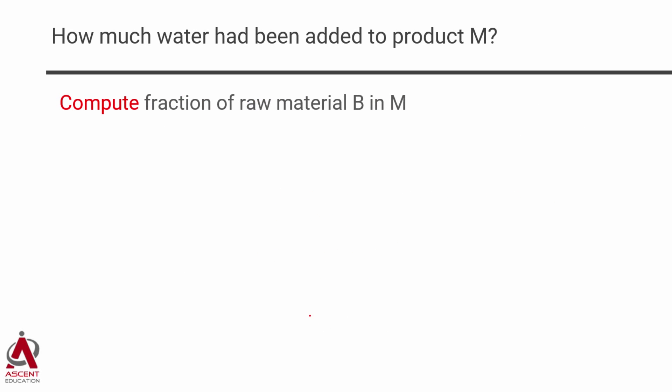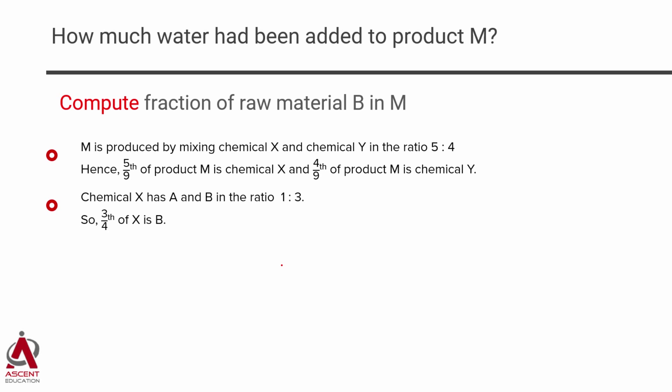We're going to compute the fraction of raw material B in M. We'll start with the information given to us. M is produced by mixing chemical X and Y in the ratio of 5 is to 4. So, obviously, 5 ninths of M is chemical X and 4 ninths of M is chemical Y. Let's get into what does X comprise. It comprises A and B in the ratio of 1 is to 3. My interest is in finding out how much B is there in it. 3 fourths of X is going to be B.